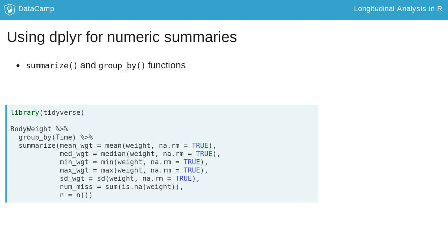Here we use the body weight data and group the analysis by the time variable. Then the summarize function computes the mean, median, minimum, maximum, and standard deviation of the outcome variable. Note the na.rm argument is specified for each function to remove any missing data prior to calculating the descriptive statistic. If this was not specified and there are missing data, NA will be returned. The number of missing observations and total observations at each time point are also returned. This information demonstrates the balanced or unbalanced nature of the data and the amount of missing data compared to the total number of observations.